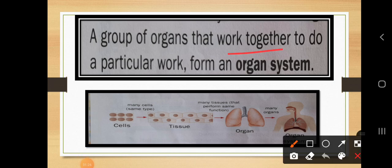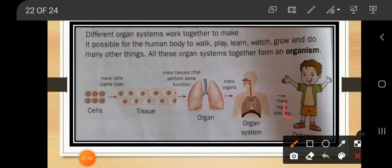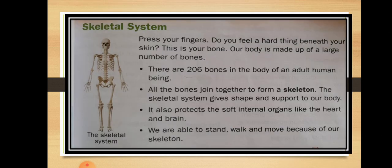A group of organs that work together to do a particular function form an organ system. The work of the organ system is to help the human body to play, to walk, to learn, to watch, to grow — these are all functions of the organ system, and it is present in the organism. It may include organs like the brain, the heart, and others that help us perform many kinds of actions in our day-to-day life.